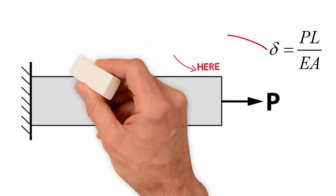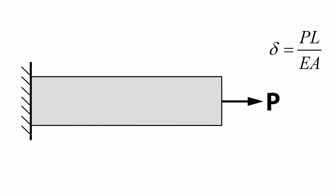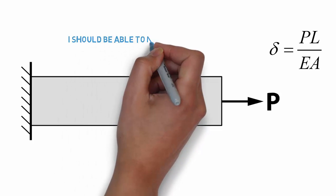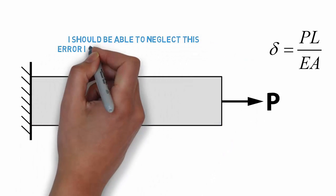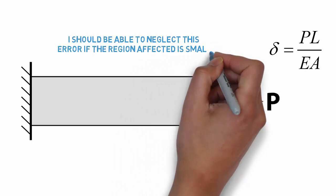We can, of course, ignore the influence of the boundary conditions and calculate a deflection using this force-displacement relationship, but we should have some way to assess if neglecting this influence is acceptable.